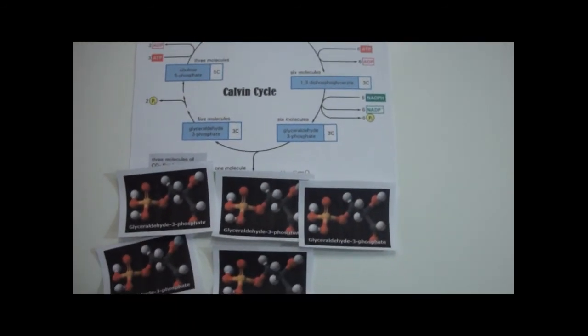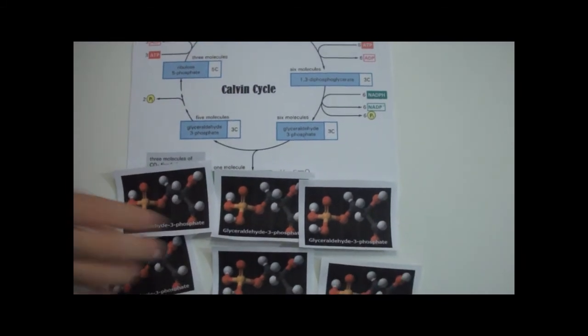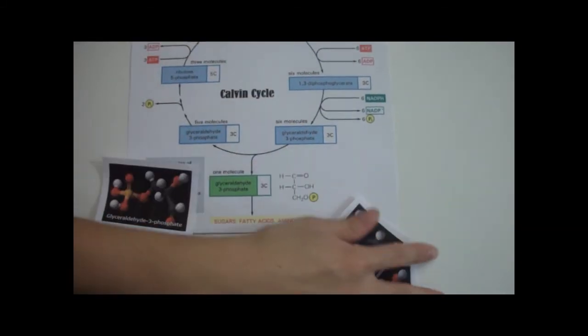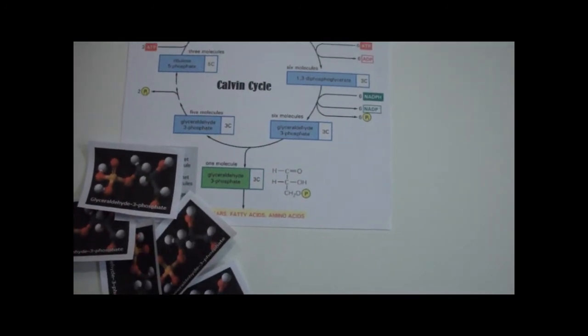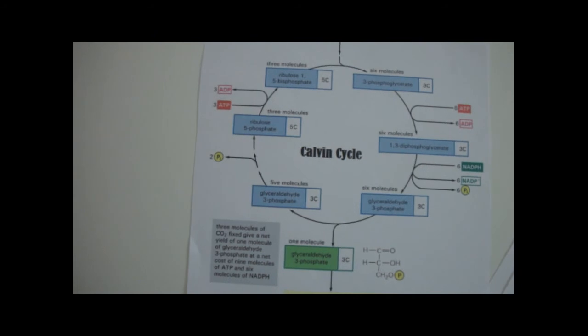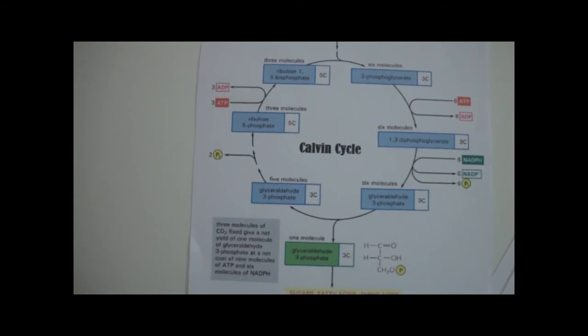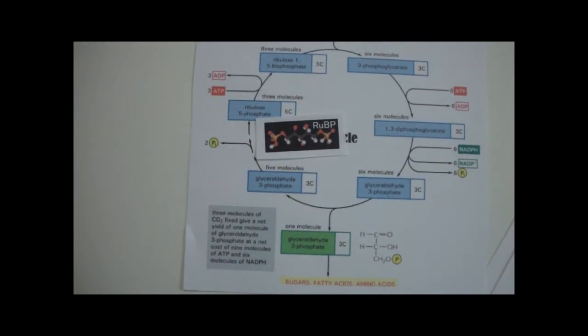One of these sugar molecules is released for use, the rest are recycled back into RuBP. The carbon skeletons of the G3P are rearranged using three molecules of ATP, so that the RuBP is ready to receive more carbon dioxide, thus continuing the cycle.